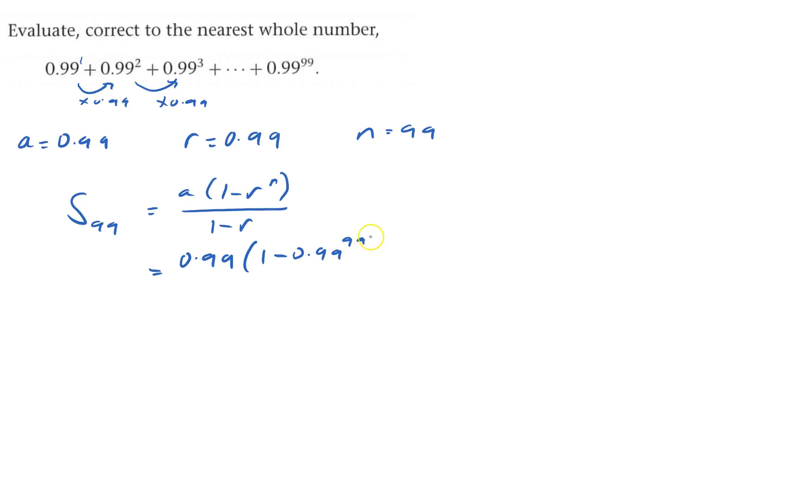This equals the numerator divided by 0.01, that's one hundredth. So if I multiply top and bottom by 100, I'll get rid of this denominator.